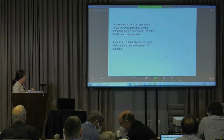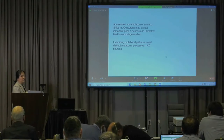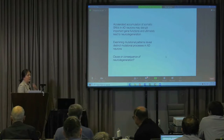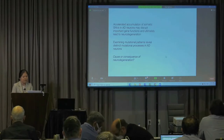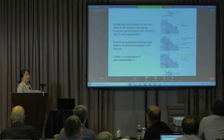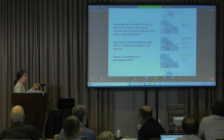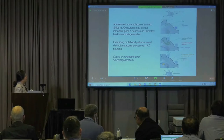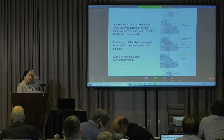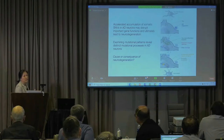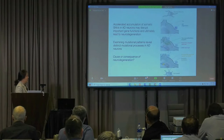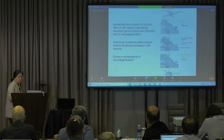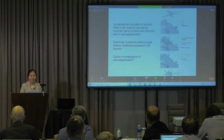By examining mutational patterns, we can understand distinct mutational processes in AD neurons. The important question — whether this is the initial cause or just a consequence of neurodegeneration — we still don't know. Our current working model is that initial tau, A-beta oligomers, and microglial activation can cause a lot of oxidative stress and DNA damage in cells, and that can lead to the neurodegeneration or somatic mutation increase we observed.